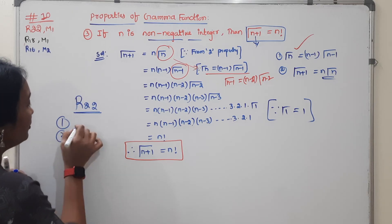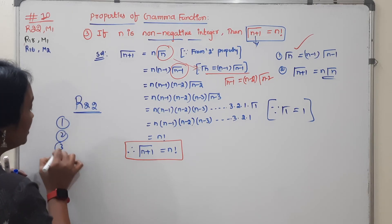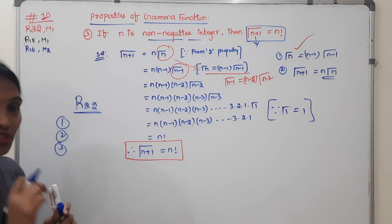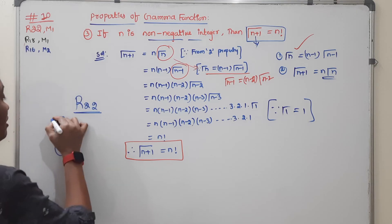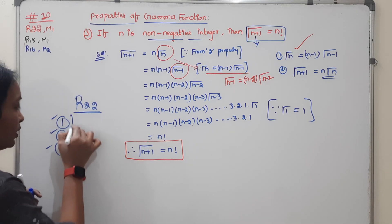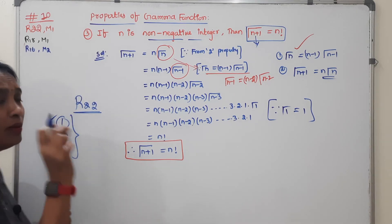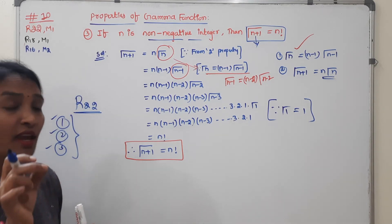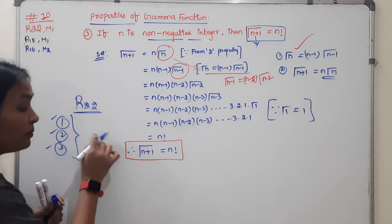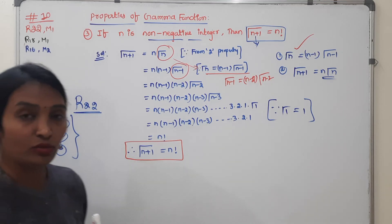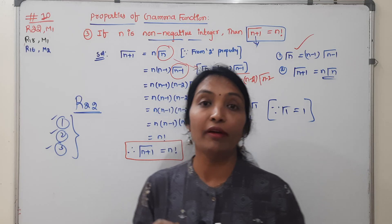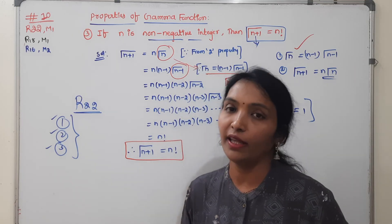First, second, third unit content is covered. These 2D problems — five topics — are very important. You are not required to do anything extra for the first, second, and third units without choice.